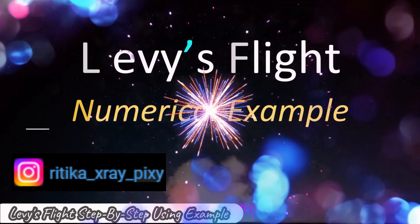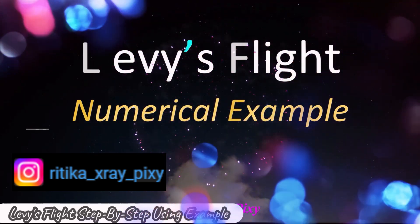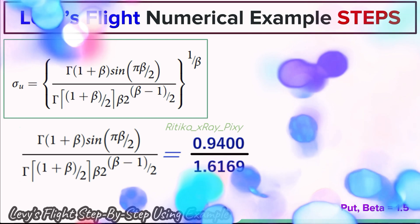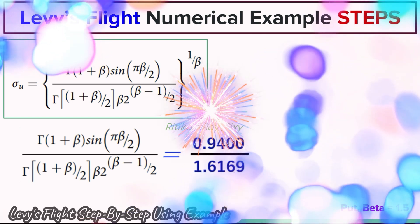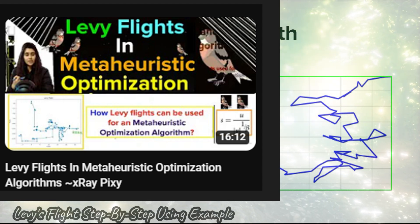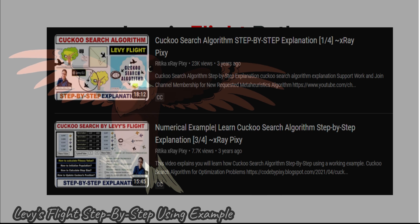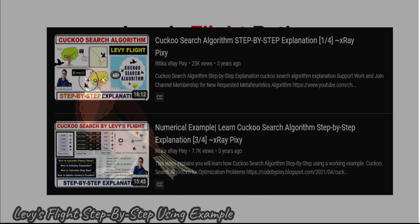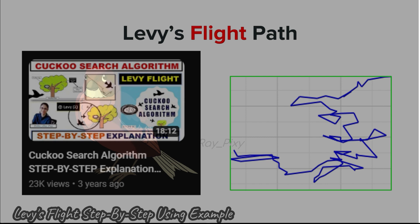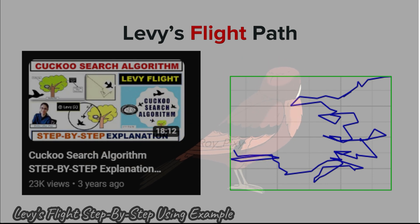In this video we will try to understand Lévy's flight using a numerical example, going step by step through the calculation. Lévy's flight is also used in the cuckoo search algorithm, where it allows the algorithm to efficiently explore the solution space by combining longer jumps and short movements, enabling both local and global search.